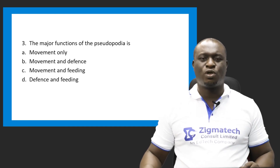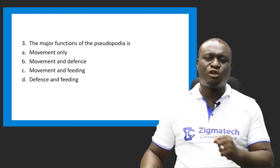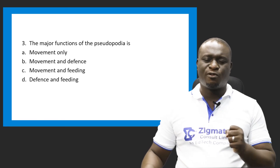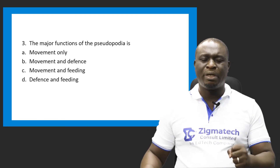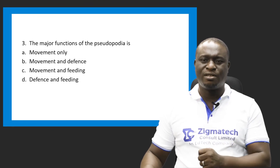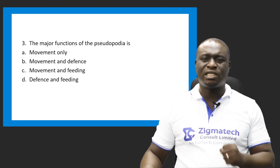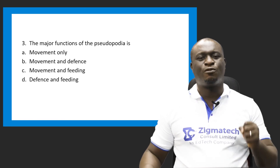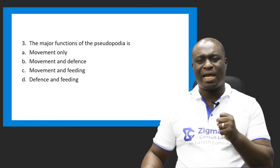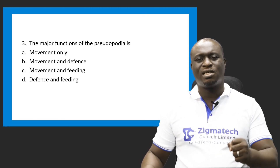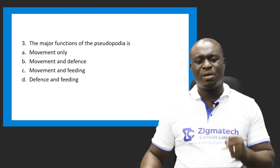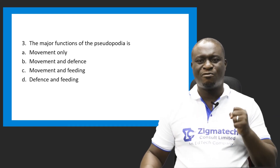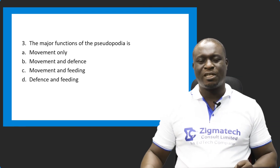Last question, question three: what is the major function of the pseudopodia? A — is it for movement only? No. B — is it for movement and defense? No. C — is it for movement and feeding? D — is it for defense and feeding? The correct answer is C. The pseudopodia is basically for movement and feeding.